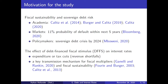The motivation for the study is twofold. We all know about the global rise in sovereign debt happening all over the world, and this is particularly salient in South Africa. Fiscal sustainability concerns have been raised for some time in academia, especially by Estian Carlitz, who is a prominent voice in this. After the global financial crisis there was a bunch of papers, but fiscal sustainability had been raised much earlier in the South African literature as well.